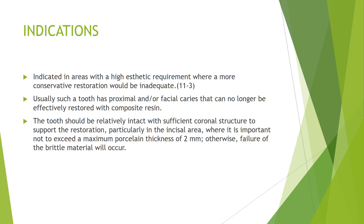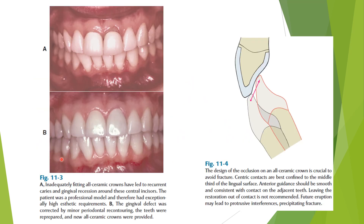In image A, you can see inadequate fitting of an all-ceramic crown that led to recurrent caries. In image B, the gingival defect was corrected by minor periodontal recontouring, the teeth were re-prepared, and new all-ceramic crowns were provided. Note the difference between picture A and picture B.